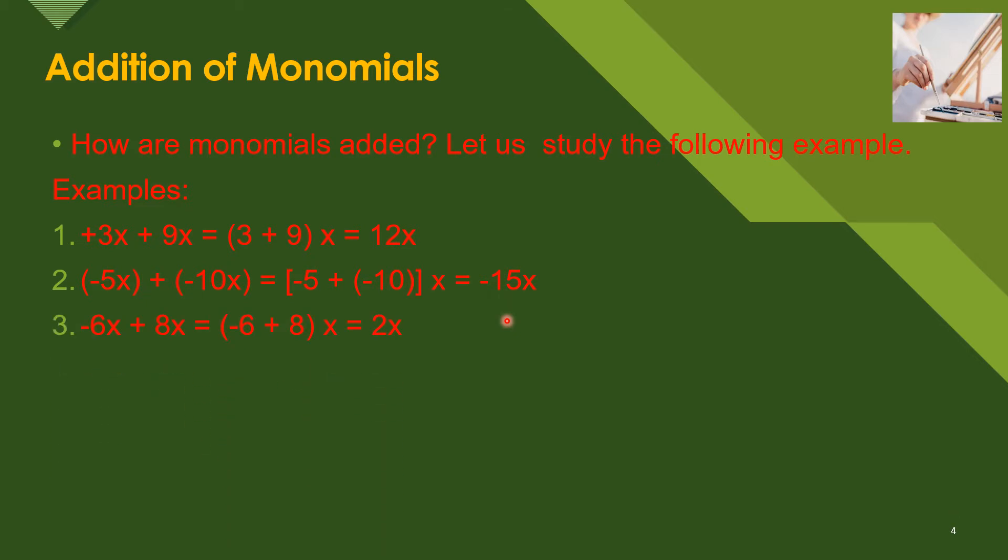Number two, we have -5x plus -10x. Of course we combine both the -5 and the -10, that's why we get -15, and copy the x, so that's why we have -15x. Next, number three, we have -6x plus 8x. Here all we need to do is -6 plus 8, we subtract. If the signs are different, subtract and copy the sign of the larger number. That's why 8 minus 6 is 2, so since 8 is larger than -6, we copy the sign of 8 which is positive, so it's 2x.